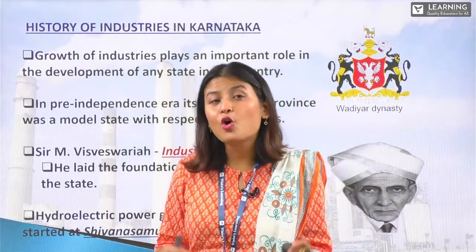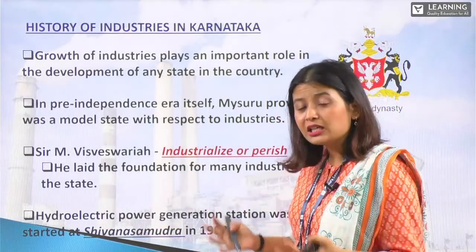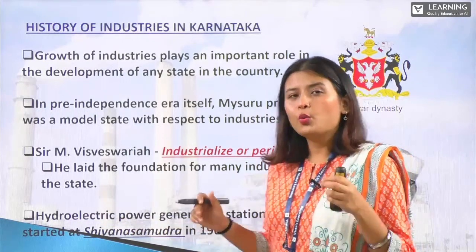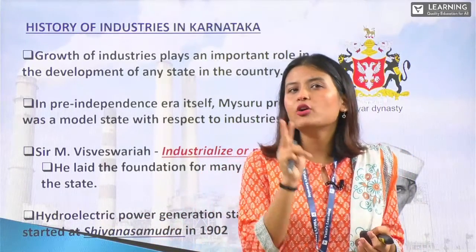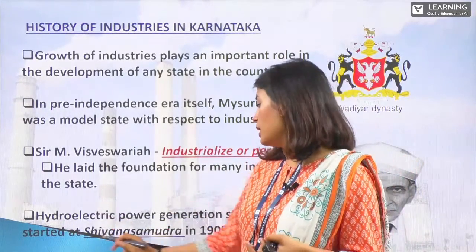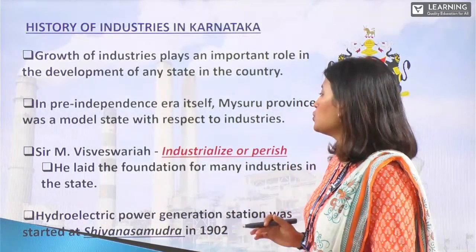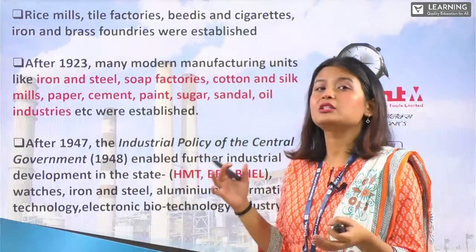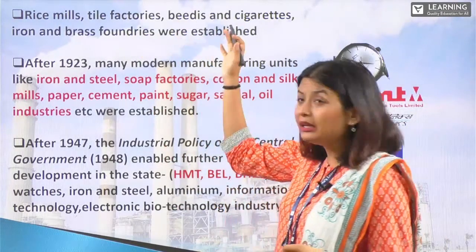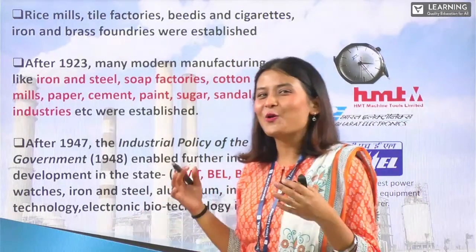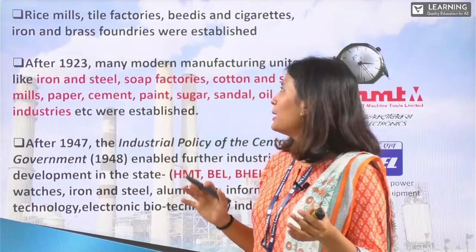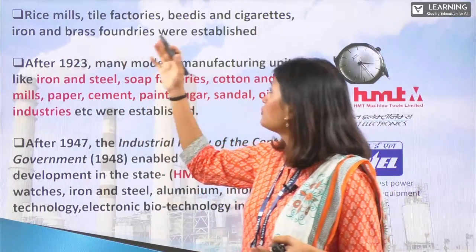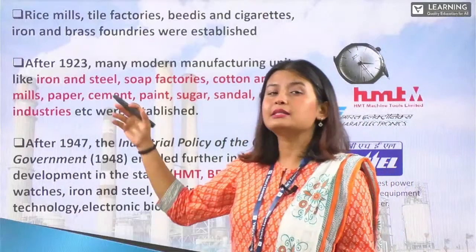This hydro power plant was established even before independence. Apart from the hydro power plant, other early industries in Karnataka included beeries and cigarettes, as well as brass foundries. Brass is a type of alloy. After 1902, moving forward to 1923, many modern industries came into being in Karnataka. Earlier, industries were cottage-based and used traditional methods, but after 1923 the industry started to get modernized with new equipment, new machines, and skilled laborers.